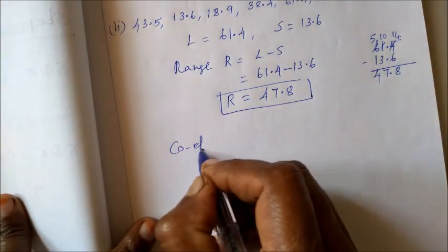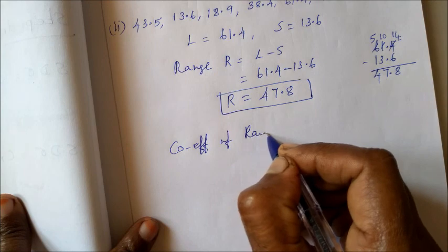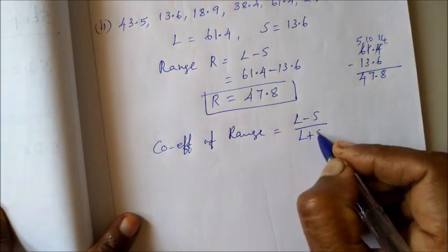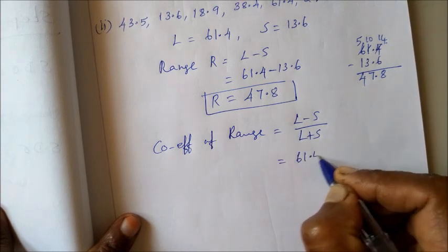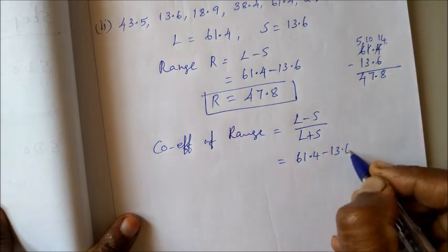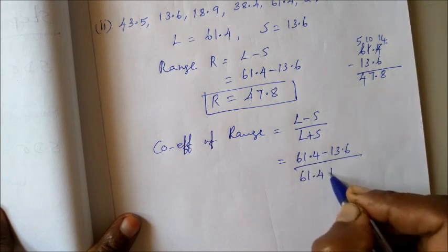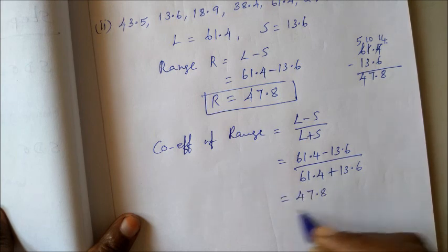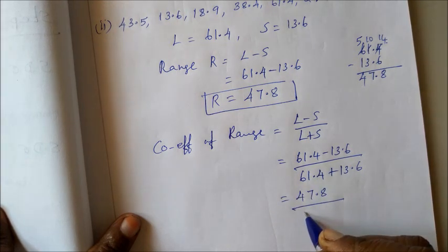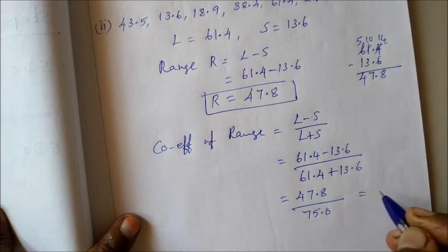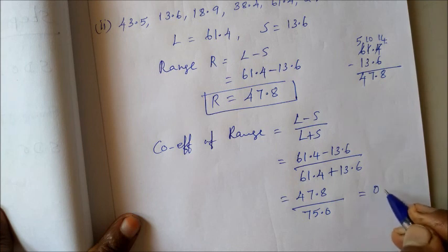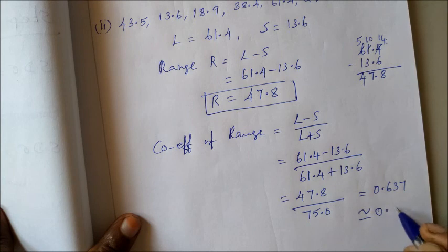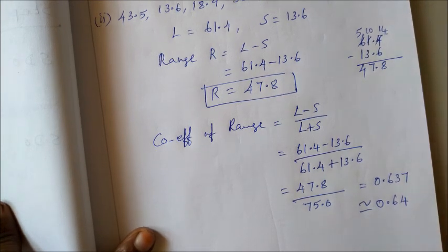Then coefficient of range. What is the formula? L minus S divided by L plus S. So 61.4 minus 13.6 divided by 61.4 plus 13.6. So subtract, that's 47.8 divided by, add them, 75.0. So 75, divide that, 0.637. Approximately we take it as 0.64.